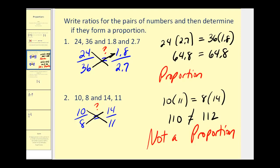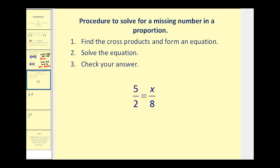Now we're going to talk about how we can solve a proportion if one of the four numbers is missing. Here's the procedure: We'll first find the cross products to form an equation. Then we'll solve the equation and then we'll check our answer.